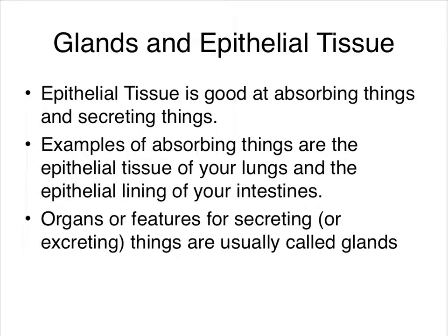Epithelial tissue is good at absorbing things and secreting things. Examples of absorption include the epithelial tissue in your lungs that absorbs oxygen and the epithelial lining of your intestines that absorbs nutrients. Organs that are primarily used for secreting are called glands.